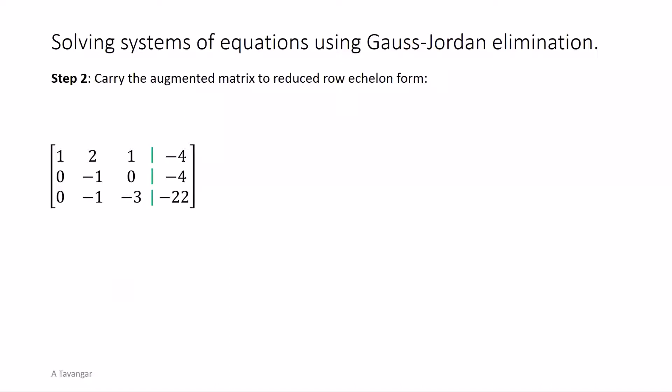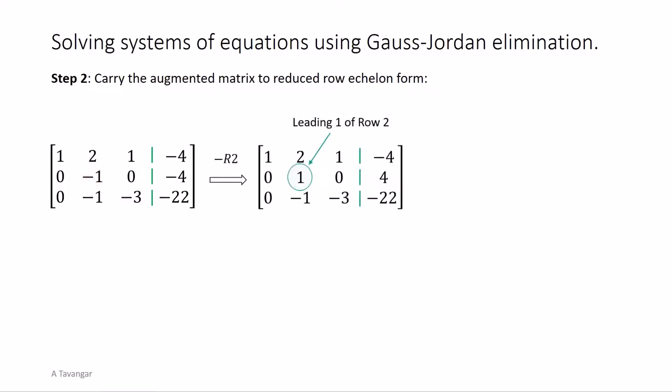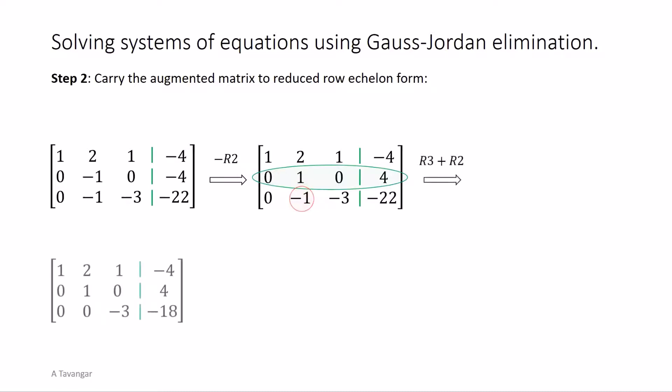We now move to the second column. The first entry of row two in this column is the leading entry of row two — in this case negative one. Similar to the previous step, we first make this number one by multiplying row two by negative one. This is the leading one of the second row. Next we use this leading one to create a zero in the entry below it, which is negative one. This is done by adding row two to row three. This completes the work on column two.